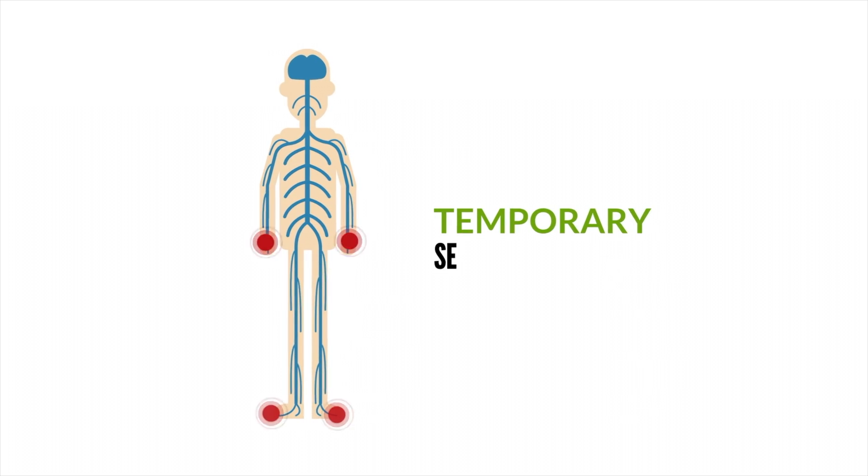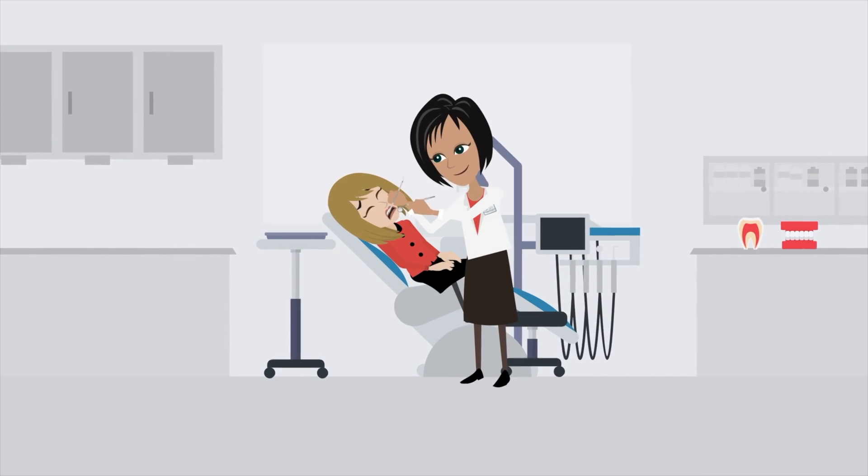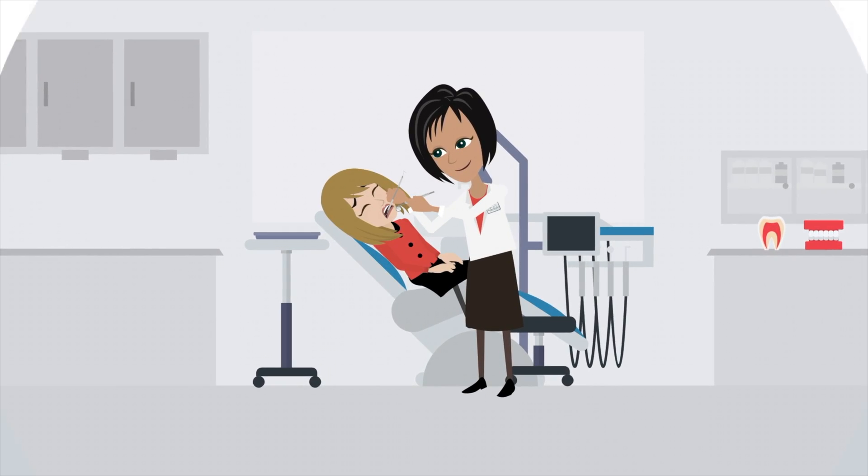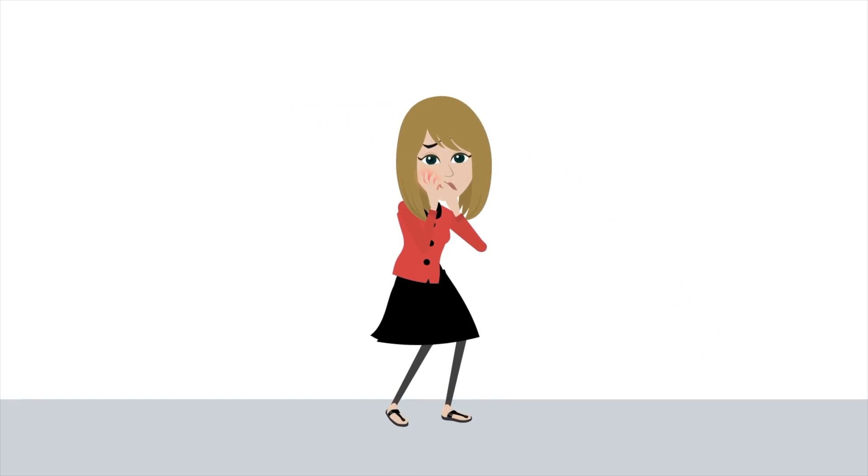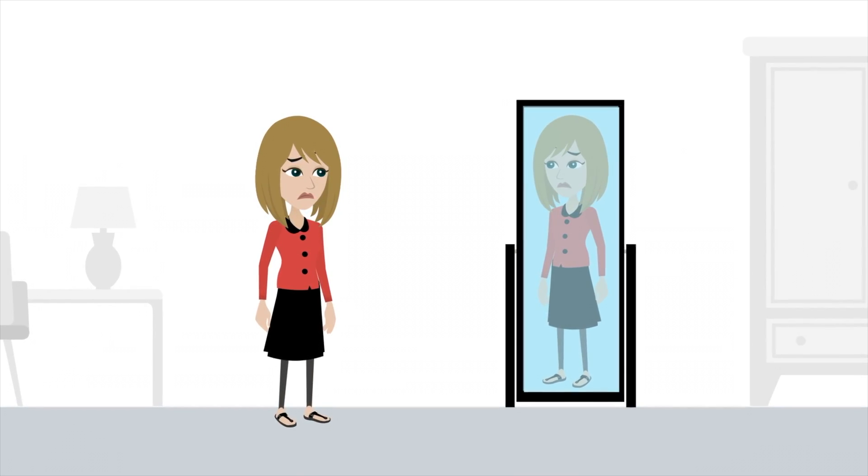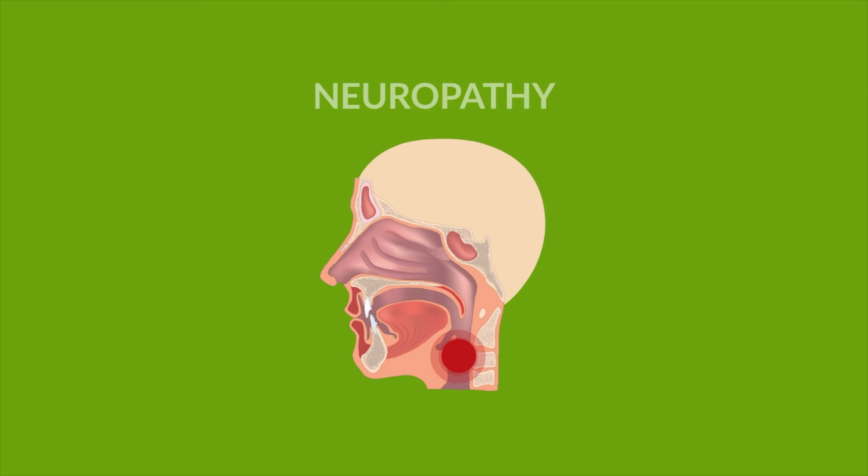To use an analogy, a temporary sensory neuropathy occurs when a person gets a numbing shot at a dental office. When the jaw becomes numb, it is not unusual for the individual to feel as if the area has become swollen, but when looking in the mirror, no swelling is present. Similarly, Globus due to neuropathy can cause an illusory throat lump sensation.